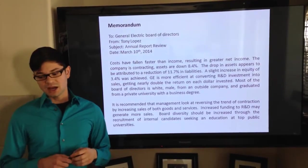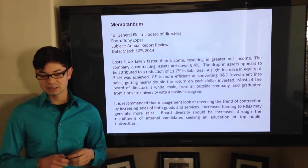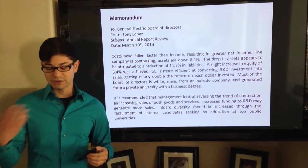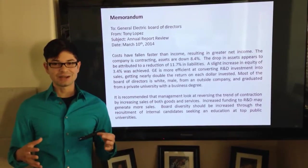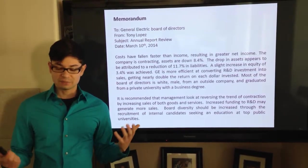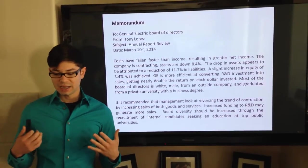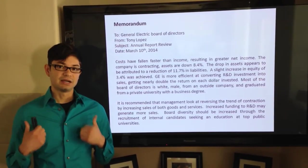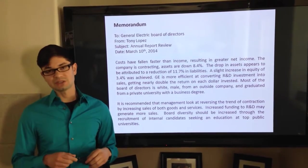So, in recap, costs have fallen faster than income, so that resulted in a greater net income. The company is actually contracting. Assets are down 8.4%, and the drop in assets appears to be attributed to a decline in 11.7% in liabilities, with an increase of 3.4% in equity.